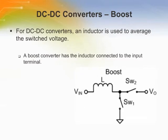A boost converter has the inductor connected to the input terminal. The DC average inductor current is equal to the input current. This converter will step up the input to produce a higher output voltage of the same polarity.